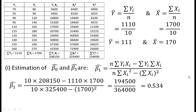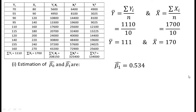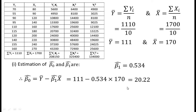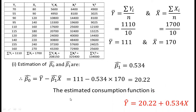Therefore, β₀ cap is equal to ȳ minus β₁ cap times x̄, that is 111 minus 0.534 times 170, and we get β₀ cap equal to 20.22. Thus, the estimated consumption function is ŷ = 20.22 + 0.534x.